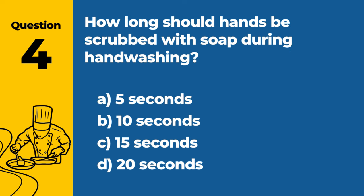Question 4: How long should hands be scrubbed with soap during handwashing? A. 5 seconds. B. 10 seconds. C. 15 seconds. D. 20 seconds. Answer: D. 20 seconds. Hands should be scrubbed with soap for at least 20 seconds during handwashing to effectively remove germs and contaminants.